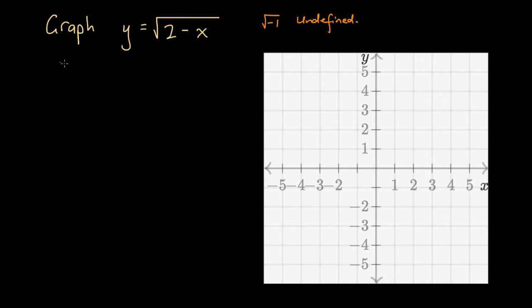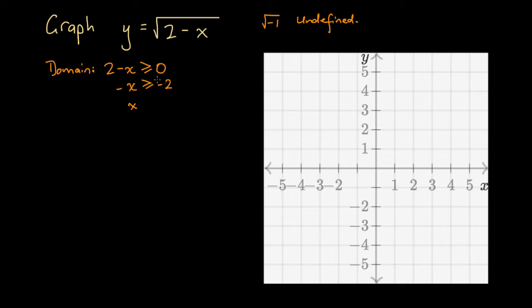So the domain requires that 2 minus x is greater than or equal to 0. Let's simplify: subtract 2 from both sides to get negative x is greater than or equal to negative 2. Then divide both sides by negative 1 — remembering that when we divide both sides by a negative number in an inequality, we swap the inequality sign. So we get x is less than or equal to 2.